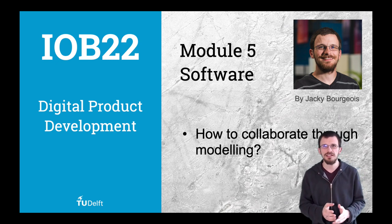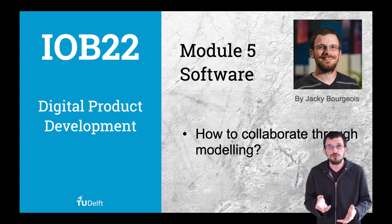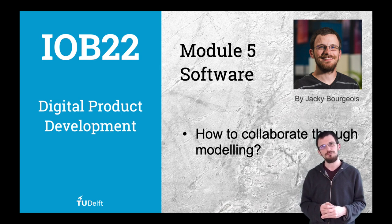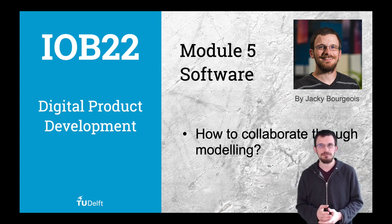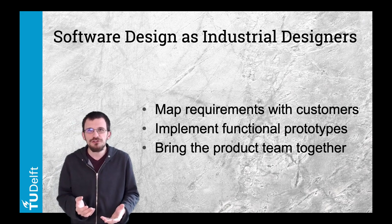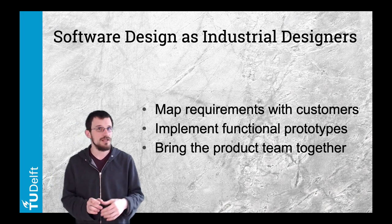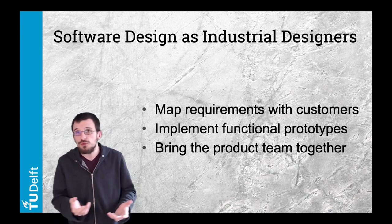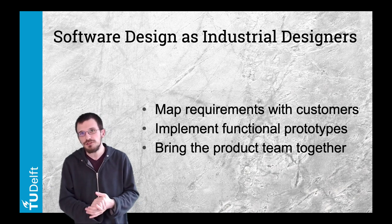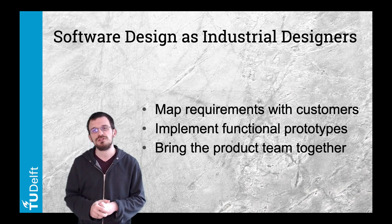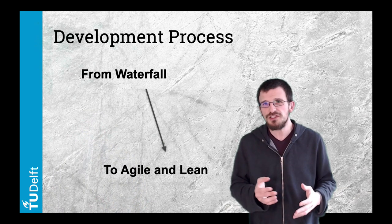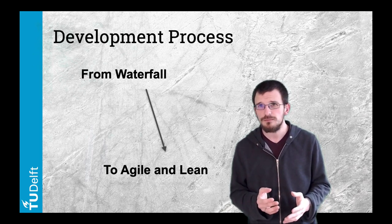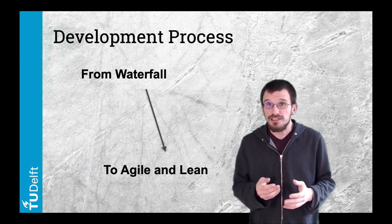In this course so far we've been discussing requirements and alternative architectures, and touched on data modeling for our software-based product. Software design is yet another vast discipline spanning from the client idea all the way to the written code. As an industrial design engineer, you will certainly take multiple roles in this process — mapping the problem space with customers, prototyping early ideas with code, and orchestrating the development process connecting the product team together.